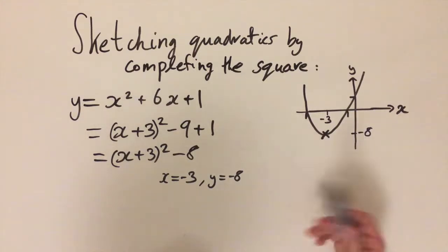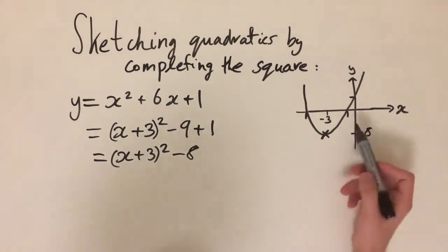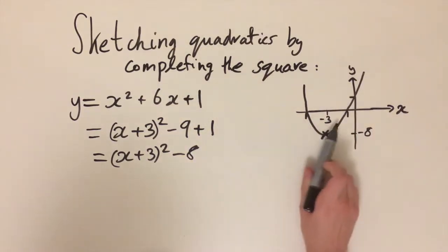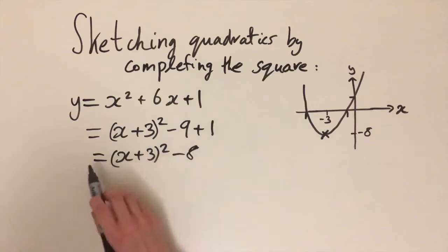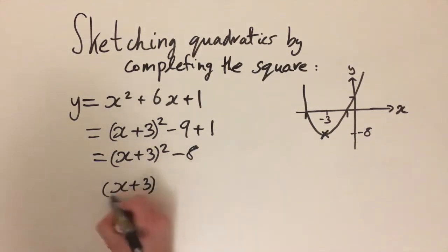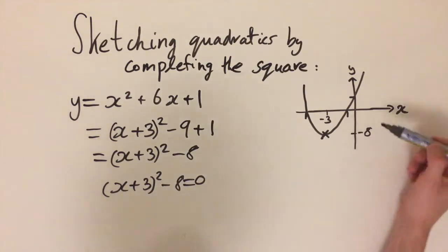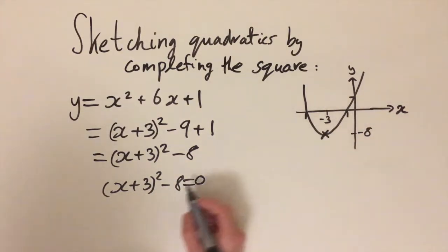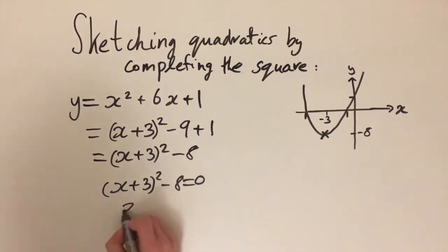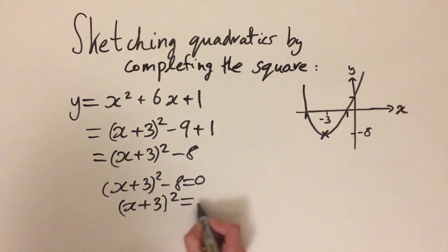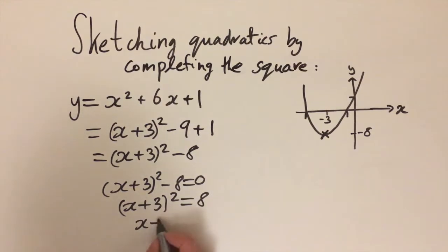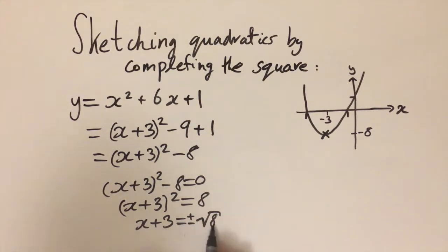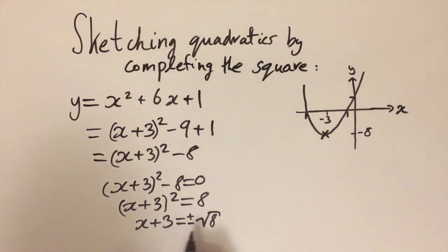This is why the completed square form is really powerful — it tells us the exact point of the minimum or maximum depending on the shape of the curve. To work out the x-intercepts we set the equation equal to zero: (x + 3)² − 8 = 0. Moving the constant over gives (x + 3)² = 8, then taking the square root: x + 3 = ±√8. Both plus and minus √8 are solutions, because (−√8)² = 8 as well, so it's important to remember both.